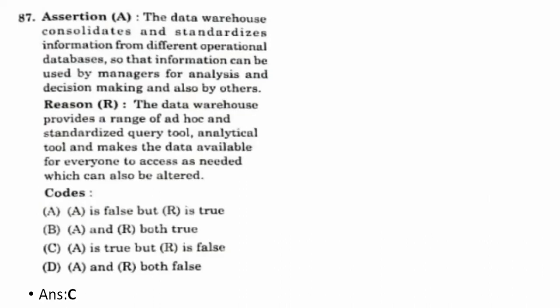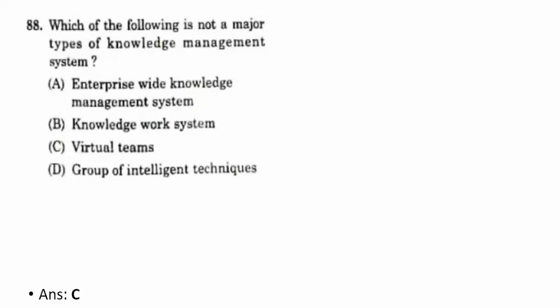Eighty-seventh question — assertion and reasoning: a data warehouse consolidates and standardizes information from different operational databases so managers can use it for analysis and decision making. The reason is the data warehouse provides ad hoc and standardized query tools and makes data available for everyone to access as needed, which can also be altered. The correct option is C — A is true but R is false.